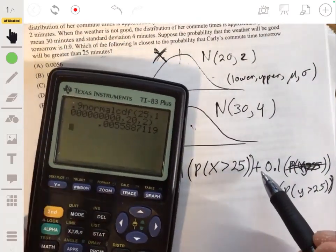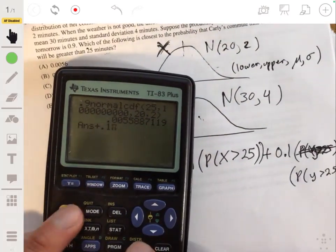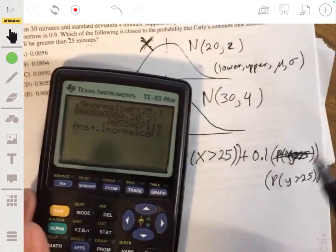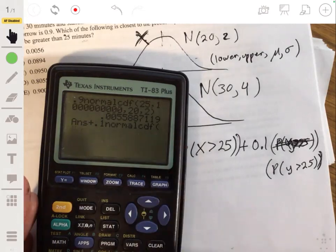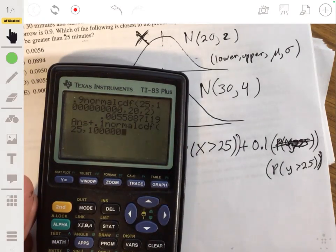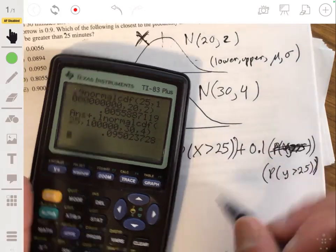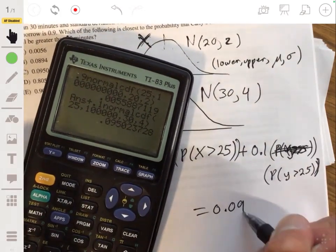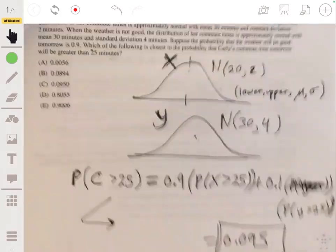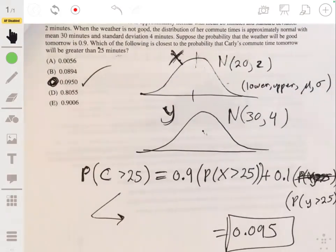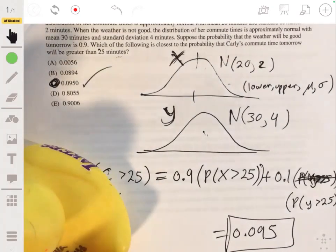But then we have to add this to 0.1 times the probability of Y being more than 25, which will follow. You fill 25 comma to like a million for your bounds, comma, this has a mean of 30 and a standard deviation of 4. So they add up to 0.095. And so the answer is C. All right. So I hope that helps. Good luck. Let me know if you have any questions in the comments.